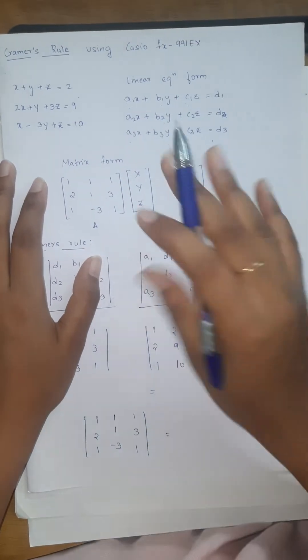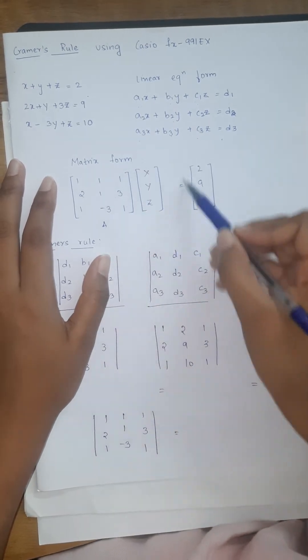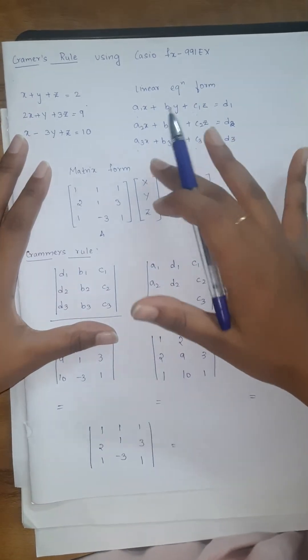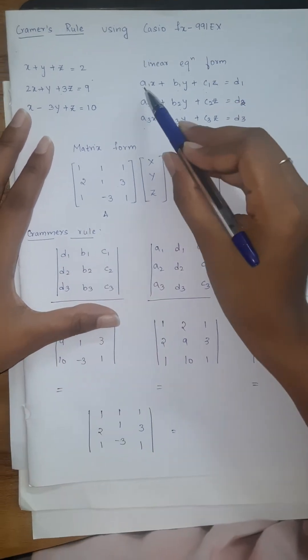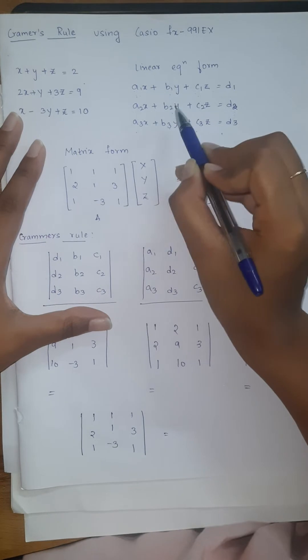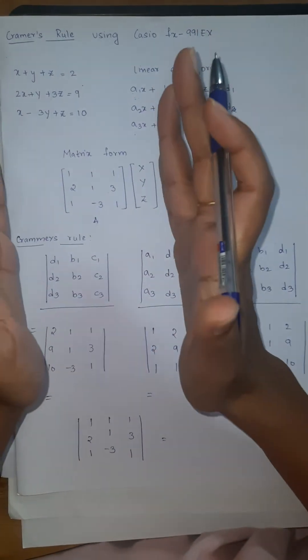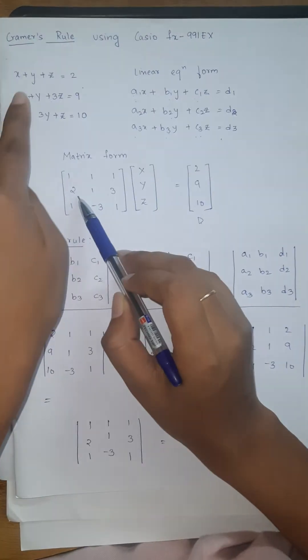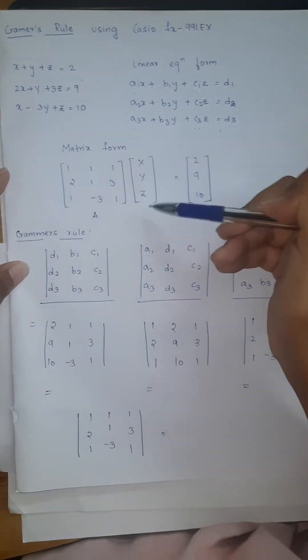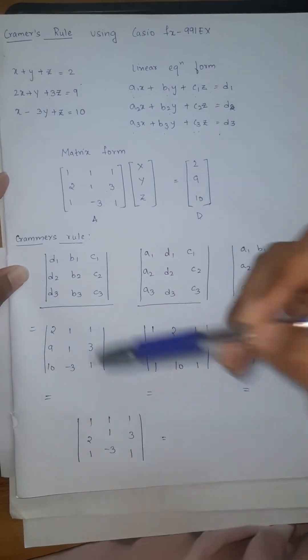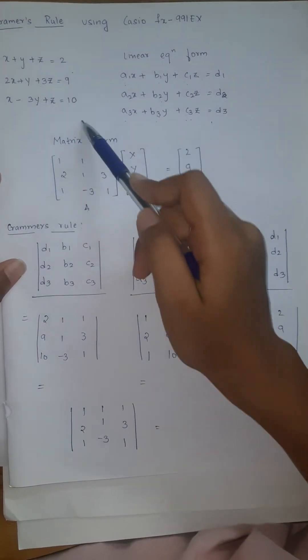Now moving on to the matrix form. Matrix form is A, this is whatever equation XYZ that we need to find, this is the D. A means A1 B1 C1, A2 B2 C2, A3 B3 C3. All the coefficients we wrote in the form of a matrix: 1, 1, 1, 2, 1, 3, 1 minus 3, 1. Then XYZ, these are the results that we need to find. This is the D: 2, 9, 10.